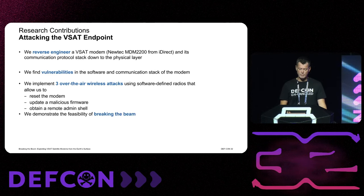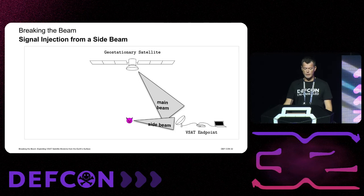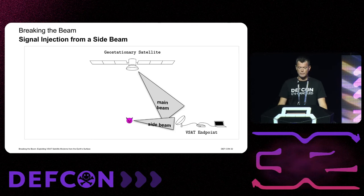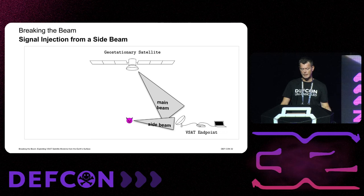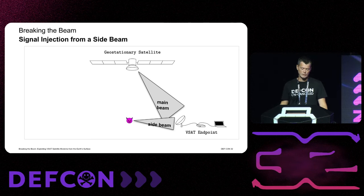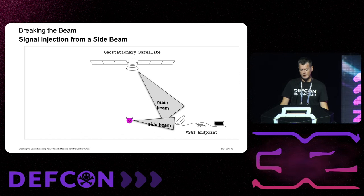We demonstrate the feasibility of these attacks by breaking the beam. By this we mean injecting signals not directly from the satellite, but from a side beam — from an attacker on earth close to the satellite dish. Conventional wisdom has assumed satellite communication is quite robust against signal injection attacks from the side, because of the high directionality of the dish.